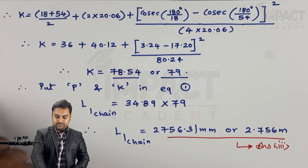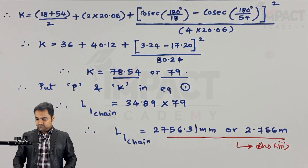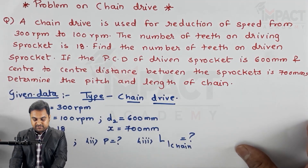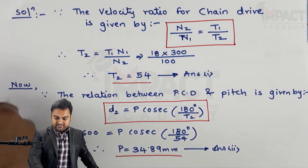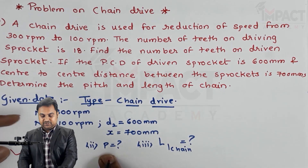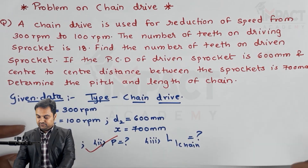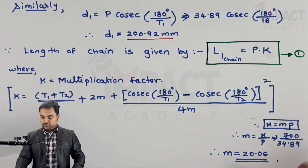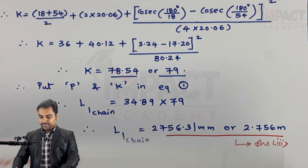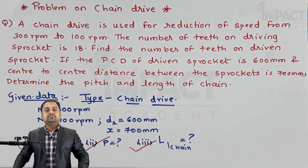In summary, this problem had three parts. First, t2, the number of teeth on the driven sprocket, came out to be 54. Second, the pitch came out to be 34.89 mm. Third, the length of chain came out to be 2.756 meters. With this, the problem is complete.